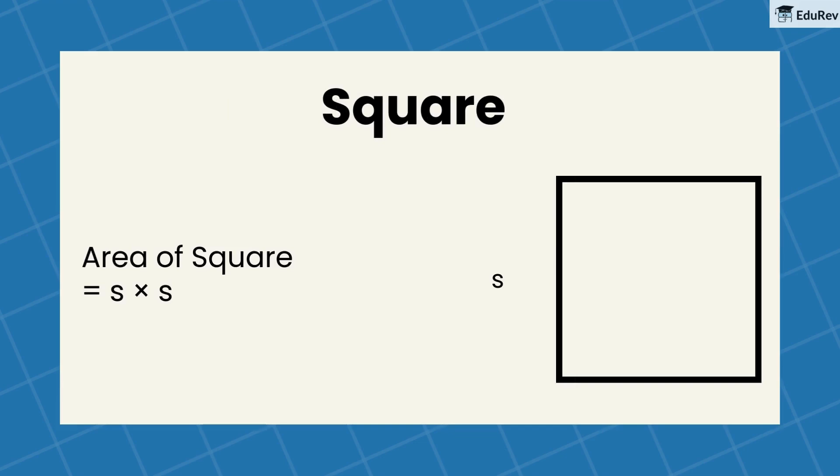Bob told us the side of the rug is 50 cm. So, to calculate the area, we have S equal to 50 cm. Putting in the formula, S multiplied by S equal to 50 multiplied by 50, we get the area to be 2500 cm square.